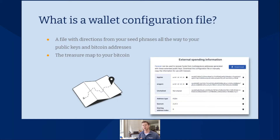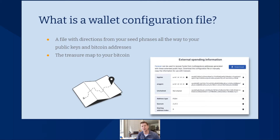What is a wallet configuration file? It is unique to multi-signature wallets. A wallet configuration file is a file that contains directions from your seed phrases that your hardware wallets generated — all the way to your public keys and then eventually to your Bitcoin addresses. Really, what you can think of this wallet configuration file as is the treasure map to your Bitcoin.